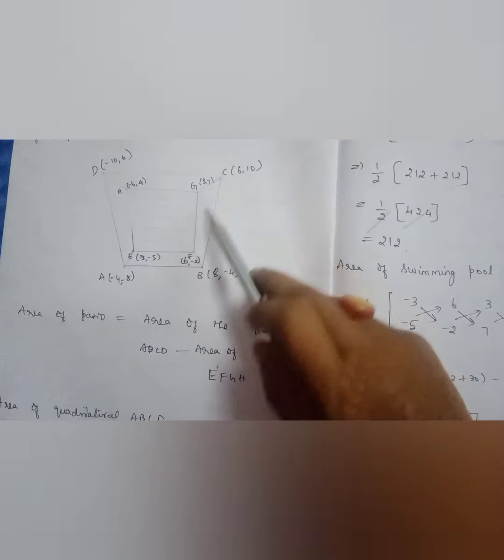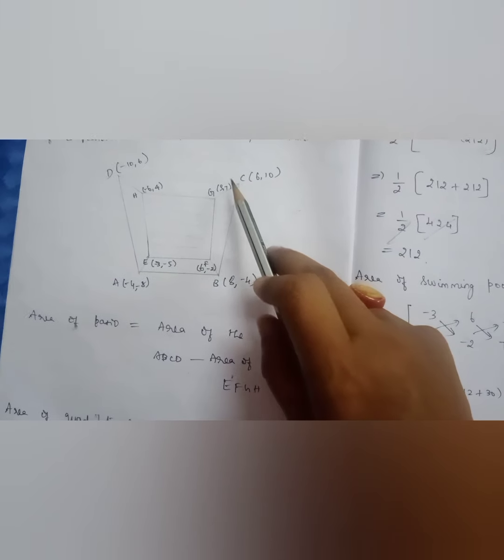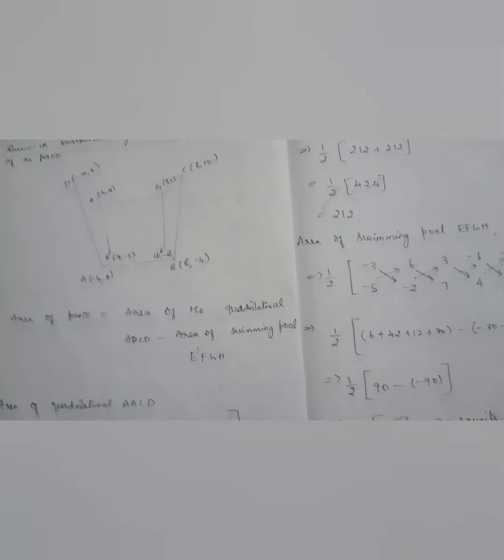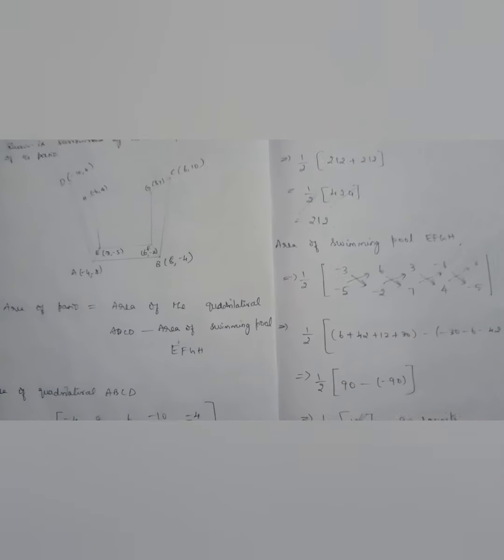To find the area of the patio, subtract the inner quadrilateral from the outer quadrilateral — it is like concentric circles. We have completed the exercise. We will see the next topic in the next class. Thank you, children.